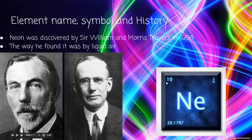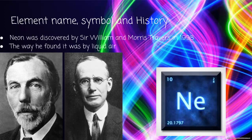The atomic number is 10. Now for the history of NEON, it was discovered by Sir William, the one on the left, and Morris Travers, right here, in 1898. The way they found it was a process called liquid air — I really don't know anything about liquid air.